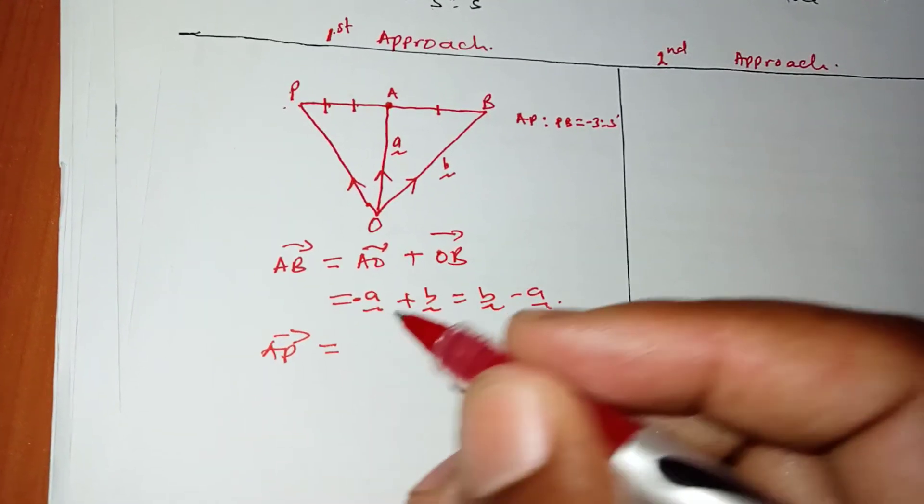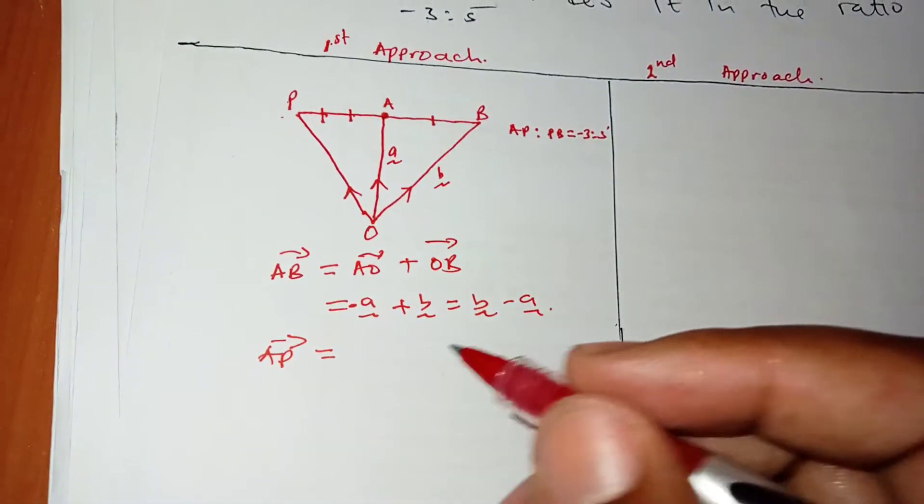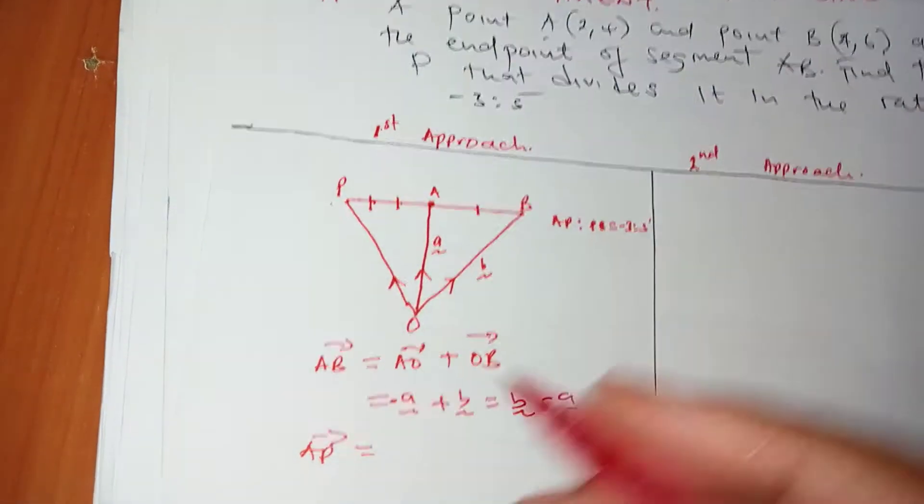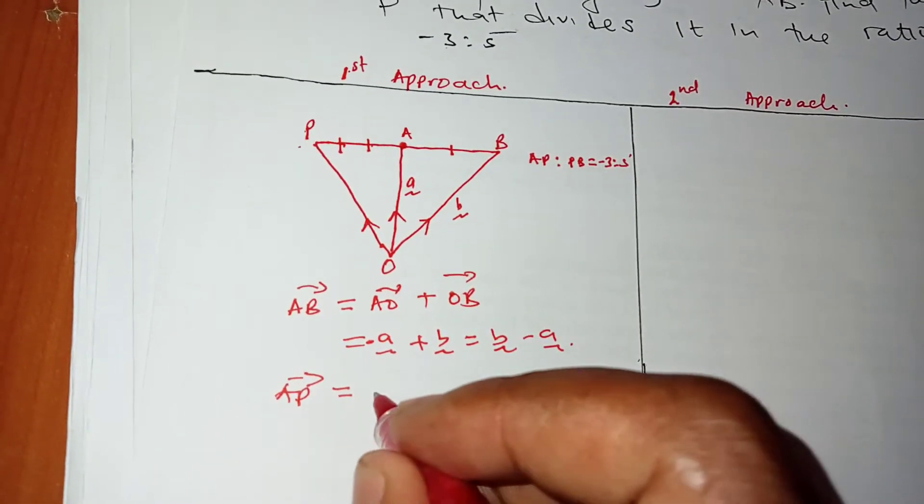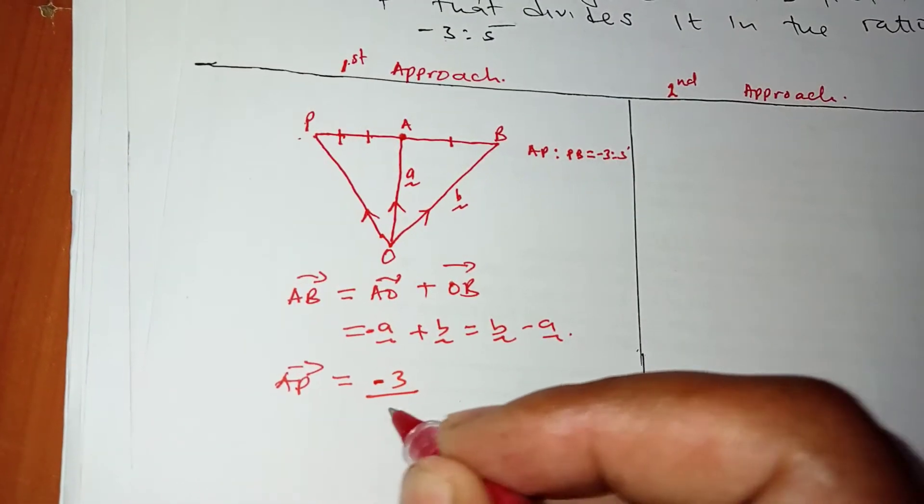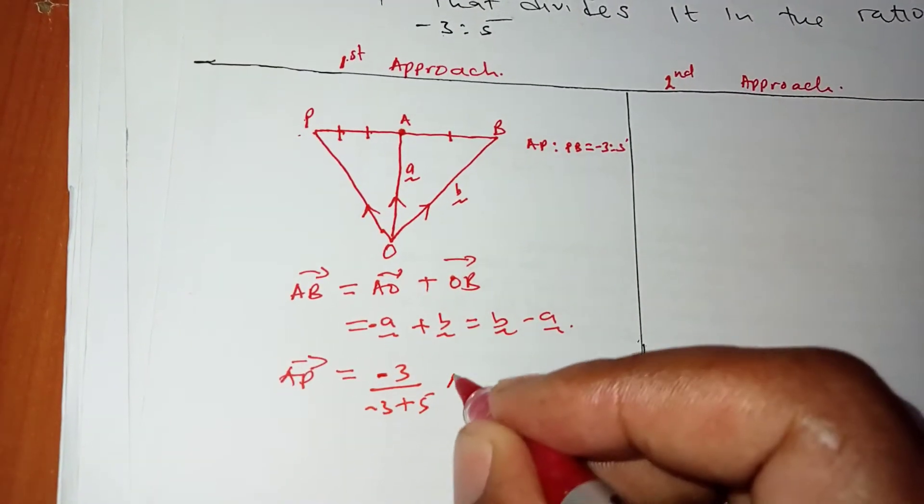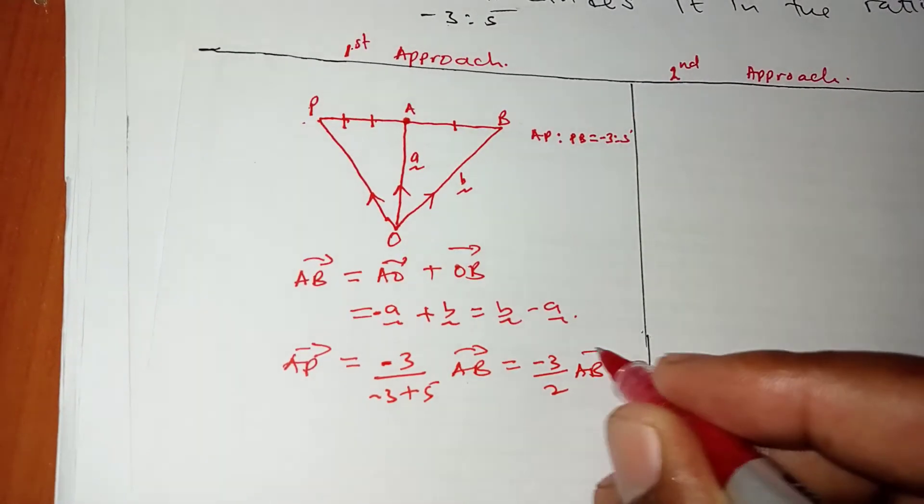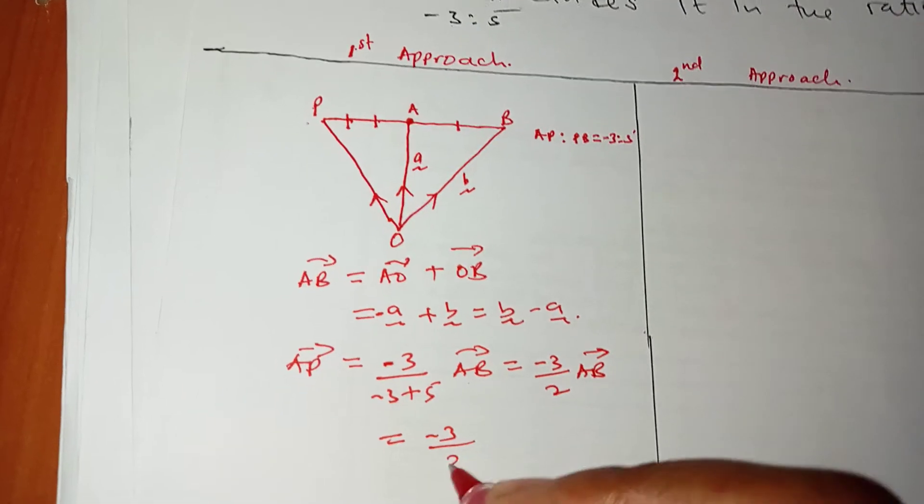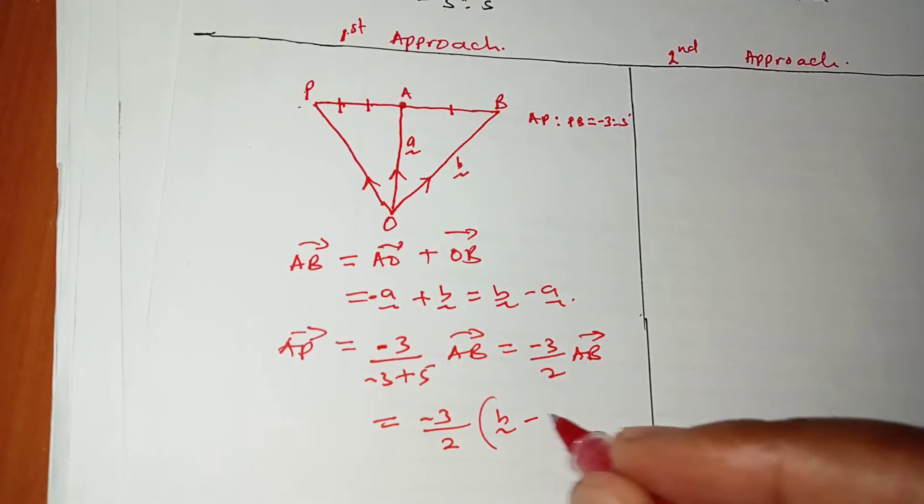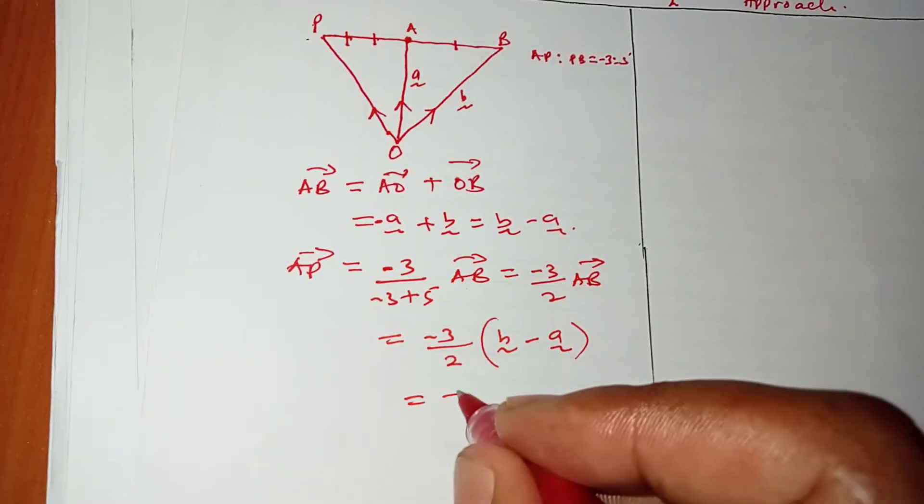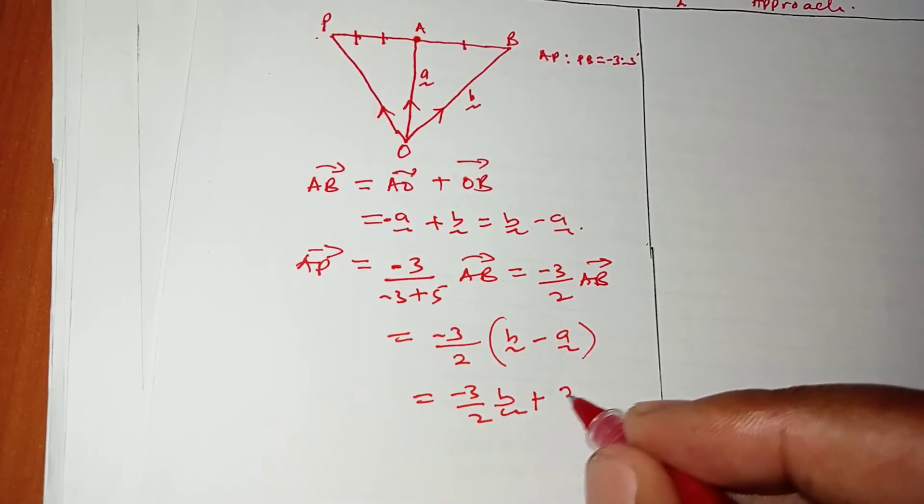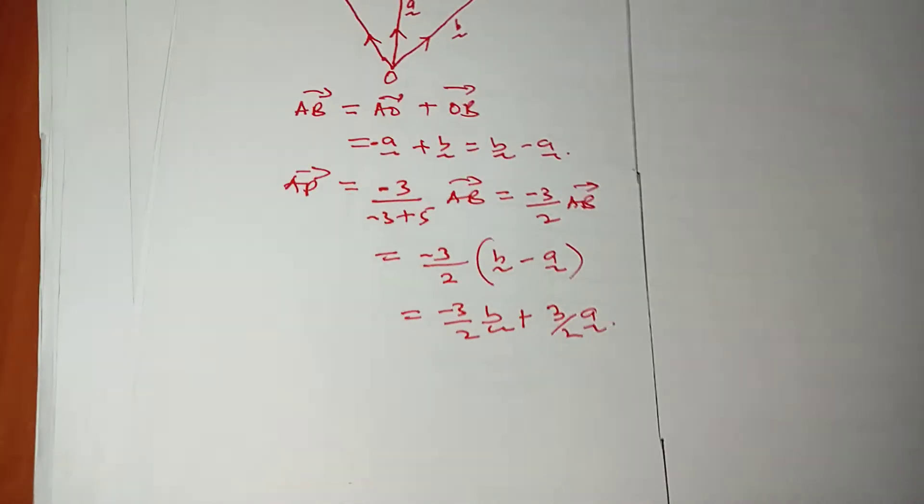How do we get AP? AP is a fraction of AB, and that fraction is -3 out of the sum of the entire line AB. So this is -3/2 of AB. We can express this in terms of A and B. This is B - A here, so this is -3/2·B, which should be plus 3/2·A.